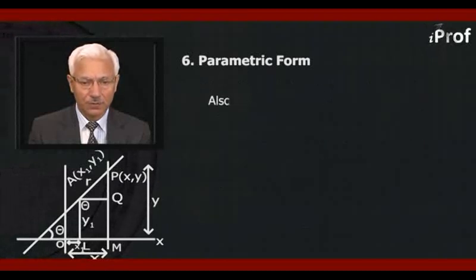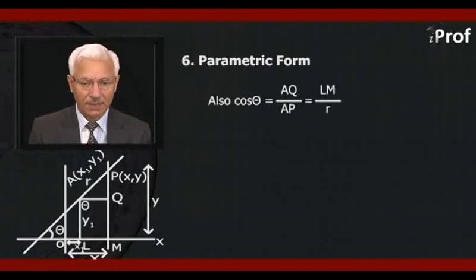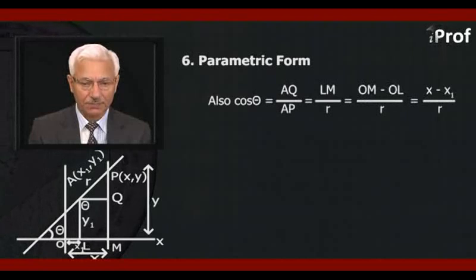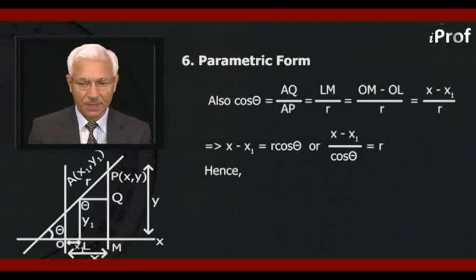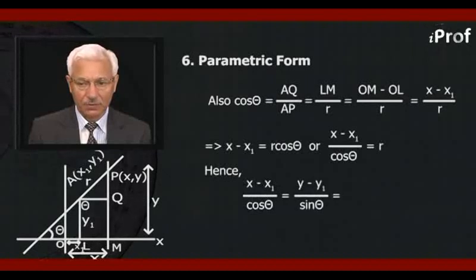Also, cos theta is equal to AQ upon AP, which is equal to LM upon R. LM can be written as OM minus OL upon R, that is x minus x1 upon R. Therefore, x minus x1 is equal to R·cos theta. Or, x minus x1 upon cos theta is equal to R. Combining the two, we get x minus x1 upon cos theta is equal to y minus y1 upon sin theta, which is equal to R.